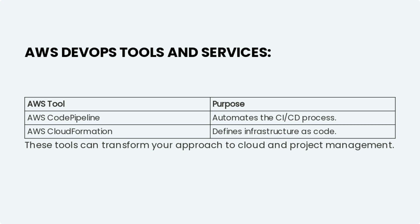Let's explore the types of AWS DevOps tools and services. This involves setting up your AWS environment and automating deployments. By leveraging tools like AWS CodePipeline and AWS CloudFormation, you can automate the CI/CD process and define infrastructure as code. These tools can truly transform your approach to cloud and project management.